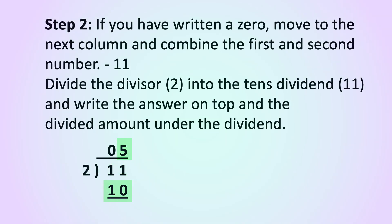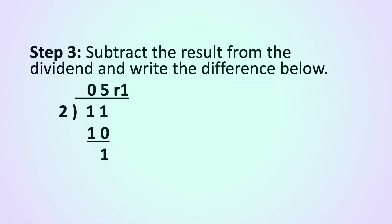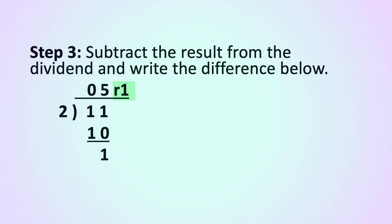So here we have 2 divides into 11 five times, with the answer of 10. Step 3. Subtract the result from the dividend and write the difference below. So 11 take away 10 is 1, and we are left with a remainder of 1.